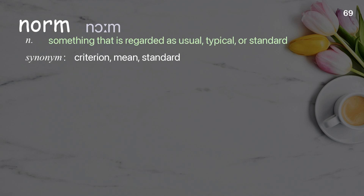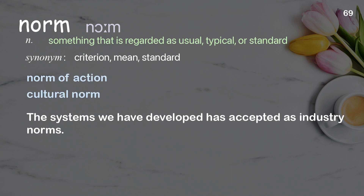Norm: something that is regarded as usual, typical, or standard. Examples: norm of action, cultural norm. The systems we have developed have been accepted as industry norms.